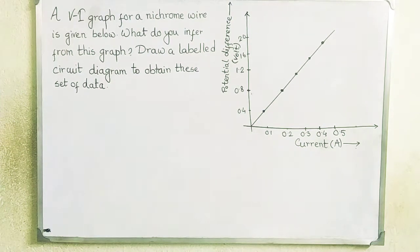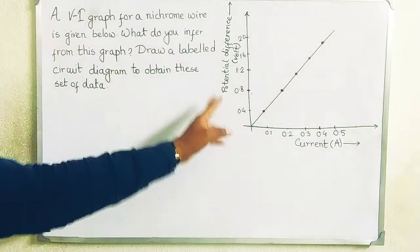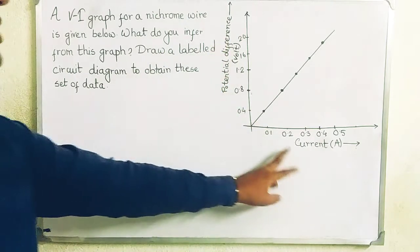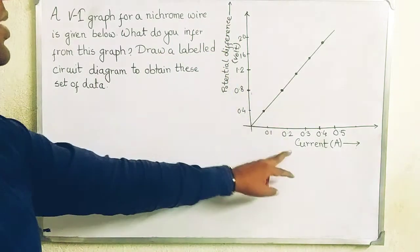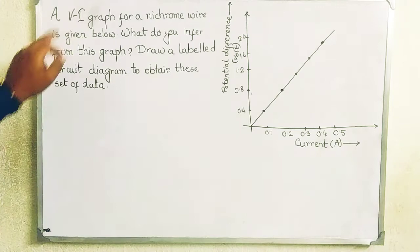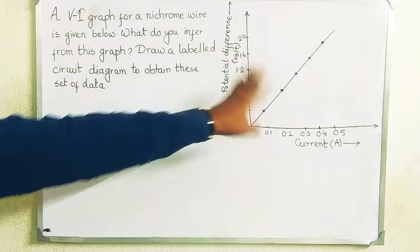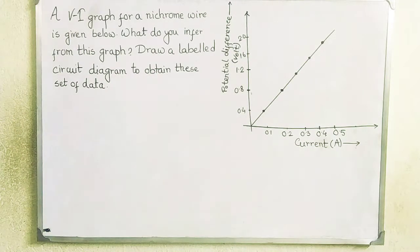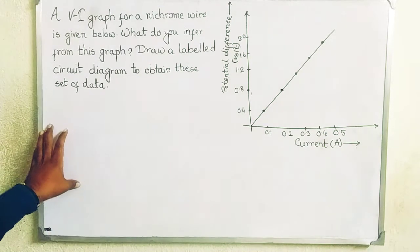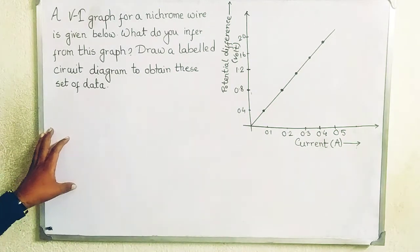Welcome all of you. Here the graph is shown, potential difference versus current, that is V versus I curve. A V versus I graph for a nichrome wire is given below. It is drawn here. What do you infer from this curve?